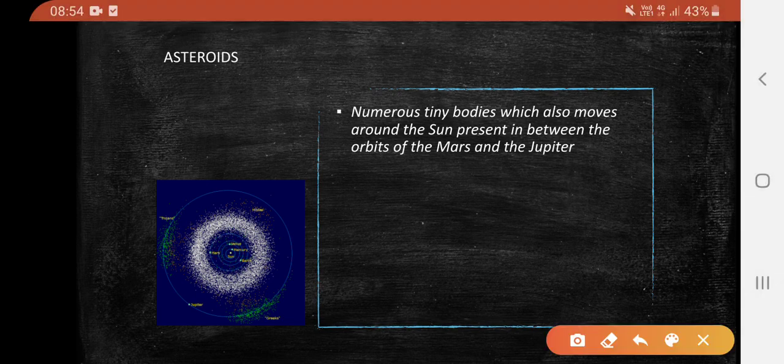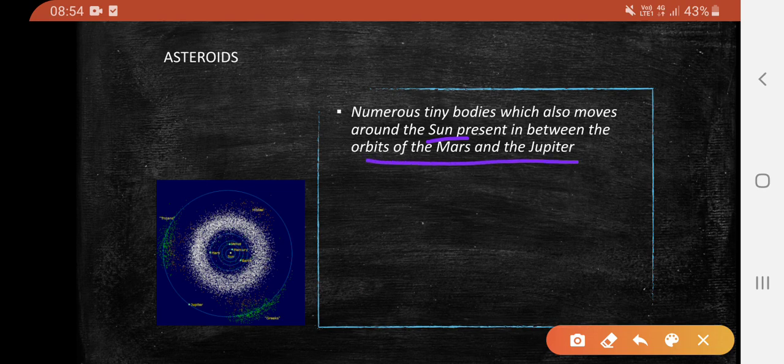Numerous tiny bodies which also move around the sun and are present between the orbits of Mars and Jupiter are called asteroids. In this picture, the white things are the asteroids.